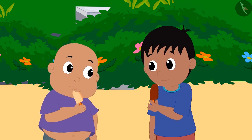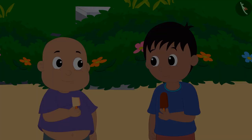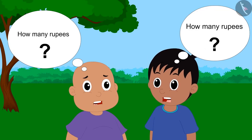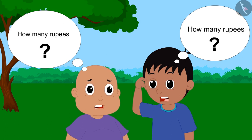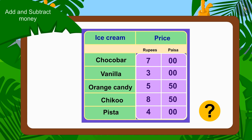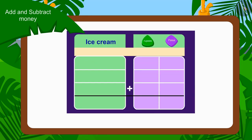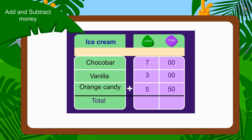Raju and Bablu first ate one choco bar ice cream and one vanilla ice cream. Then both of them shared one orange candy. Now both of them are thinking how much they have to pay for the ice cream to Babban. Kids, can you help them? Come, let's solve it together. To find the total amount, we have to add the prices of all three ice creams. We will first write the price of all three ice creams in rupees and paise.